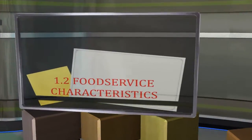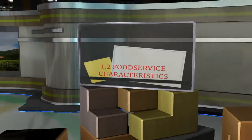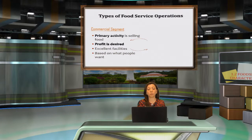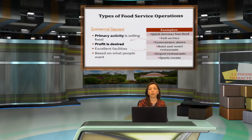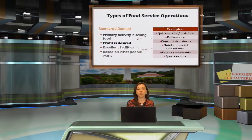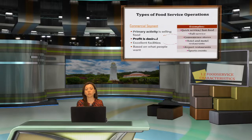The next topic is on food service characteristics. Food service can be divided into two segments. The first is the commercial segment, where the primary activity is selling food, profit is desired, and they have excellent facilities based on what people want. Examples include quick service or fast food, full service restaurants, convenience stores, airport restaurants, and sports events.